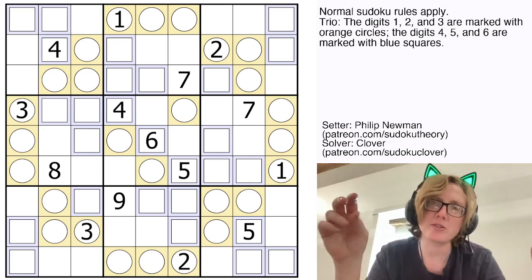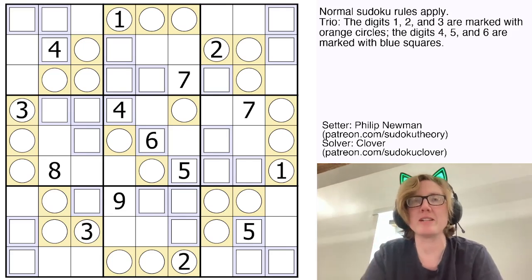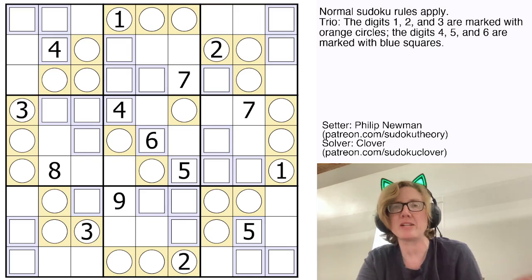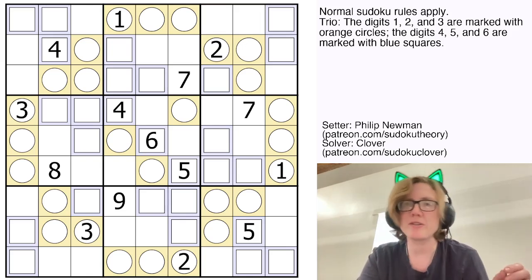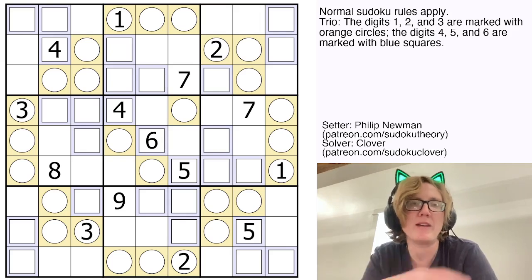Then there are also some orange circles and some blue squares in the grid. Orange circles can only ever have the digits 1, 2, and 3. Blue squares can only ever have the digits 4, 5, and 6.